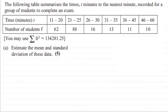Hi there. Now for this question we're given this table here which summarizes the time in t minutes to the nearest minute recorded for a group of students to complete an exam. And we're given this summary statistic here that sigma ft squared equals 134281.25. And we're asked to estimate the mean and the standard deviation of these data for five marks.